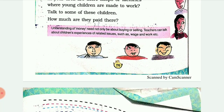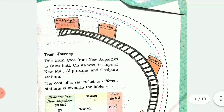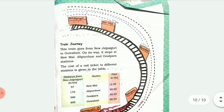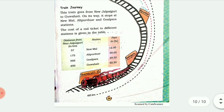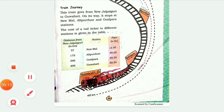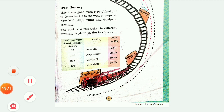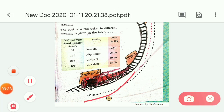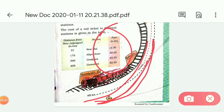If you find any children working in streets you can ask how much they are paid. Next is a train journey problem. Listen to the train distance carefully and answer the following questions. There is a chart showing distances from New Jalpahaguri to nearby stations with fares given.